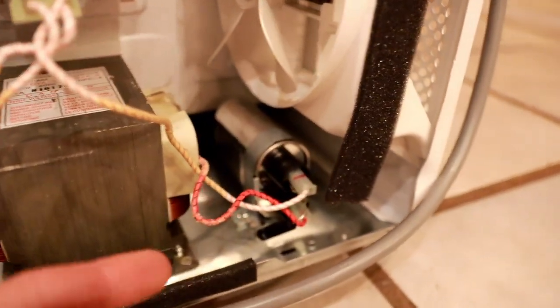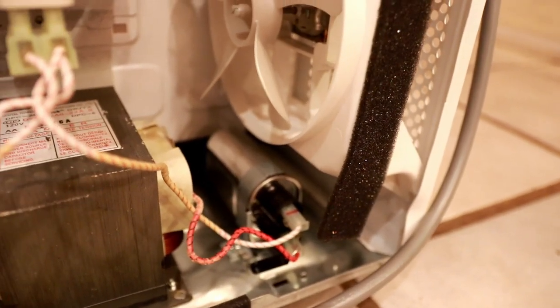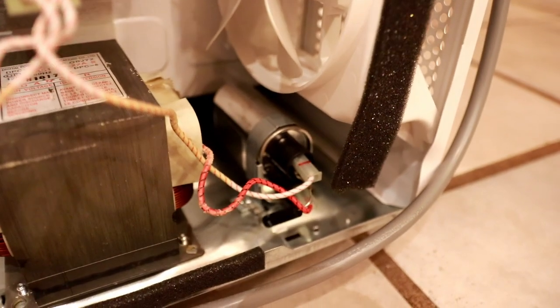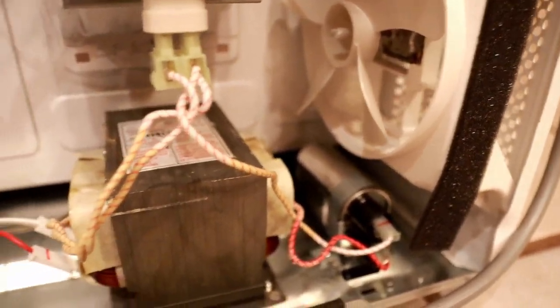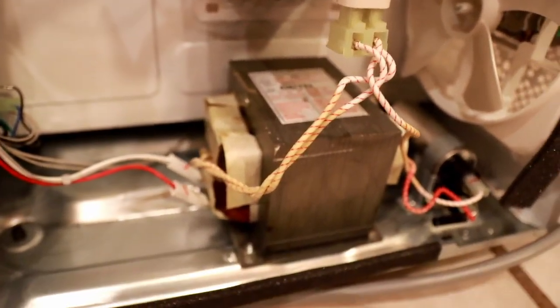That gets rectified by this high voltage diode next to this capacitor, smoothed by the filter capacitor and actually I believe doubled by the filter capacitor and then fed into the magnetron via the high voltage winding. This then has a return line to the transformer to complete the circuit.